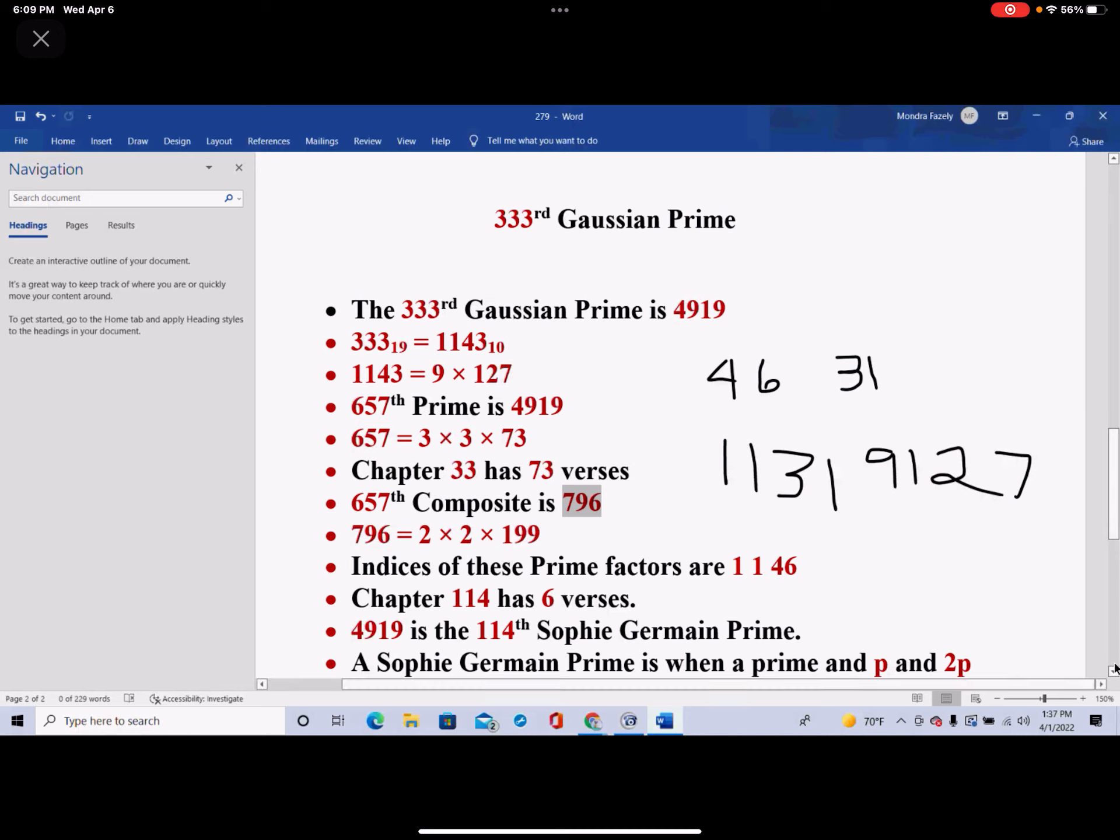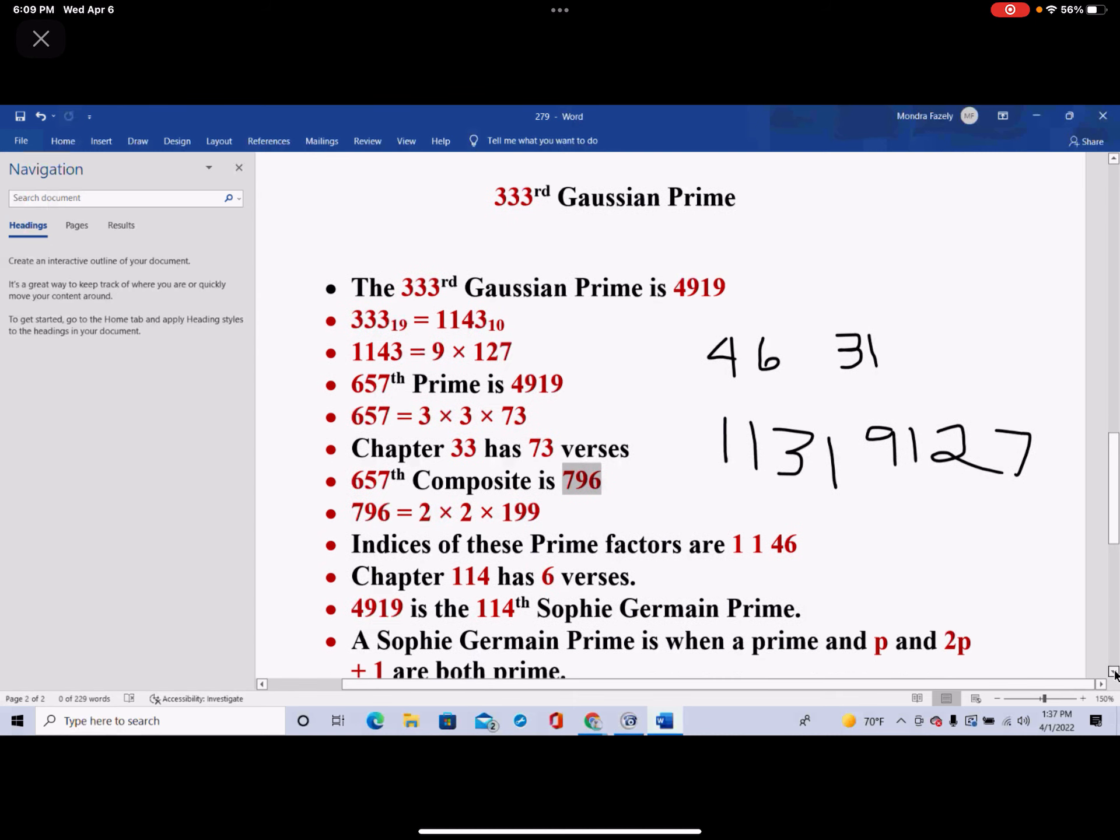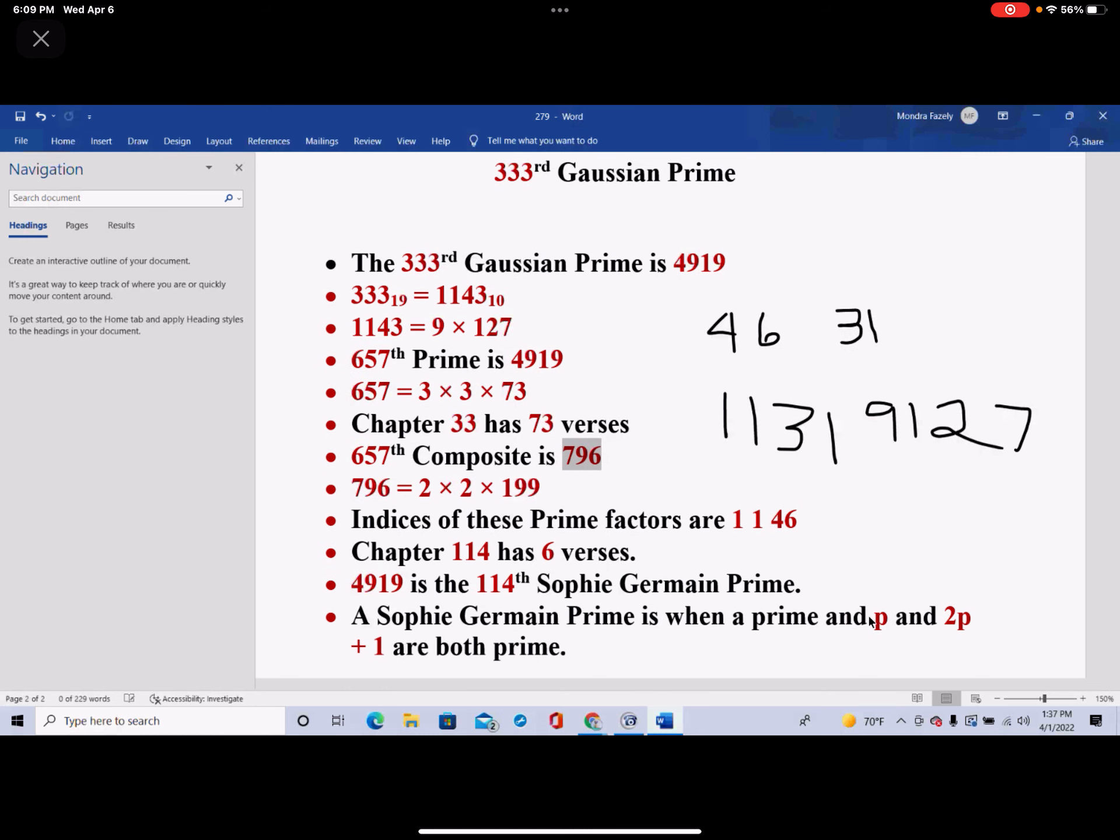But now we look at it now, because we know a lot more. And so Sophie Germain prime, Sophie Germain prime is when a prime, prime P, as you see, I just wrote this.